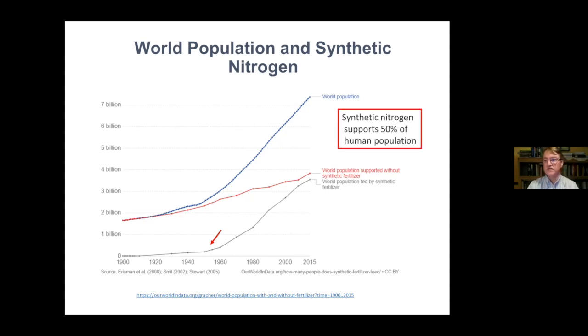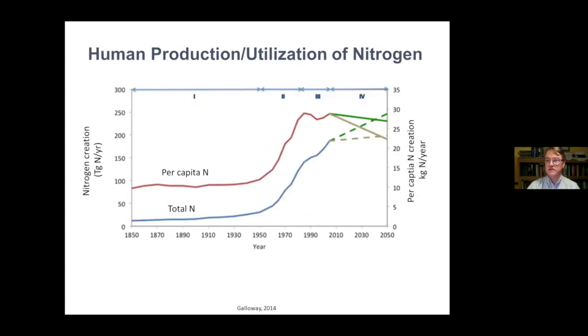This is the world population and synthetic nitrogen production. That same period of around 1950 is where the world population really started to go significantly above where it would have been if there was no synthetic fertilizer. This is the world population increase by the addition of synthetic fertilizer. You can see it basically doubling by now, doubling the population of the world. Synthetic nitrogen is supporting roughly 50% of the world's population. The growth of the nitrogen curve is not just due to the population growth itself. If you look at per capita use of nitrogen, it also significantly increased.